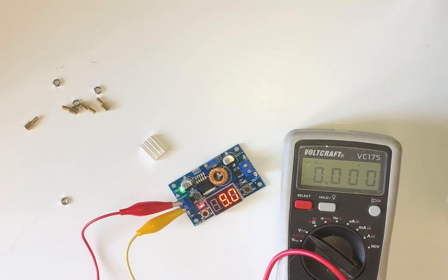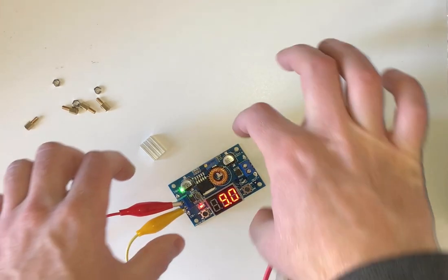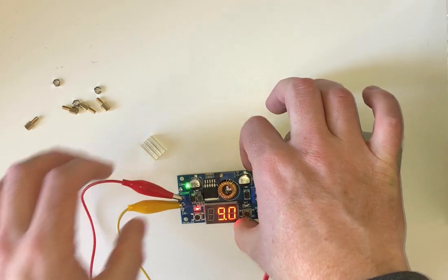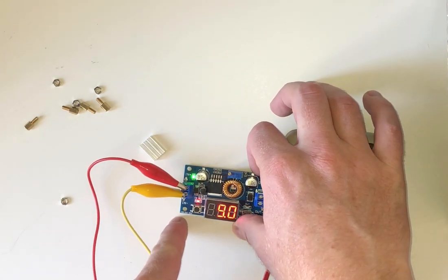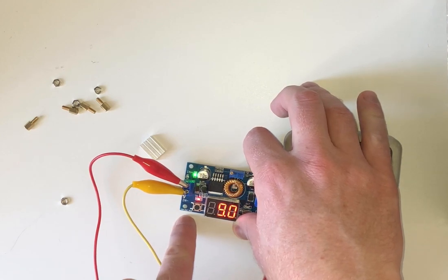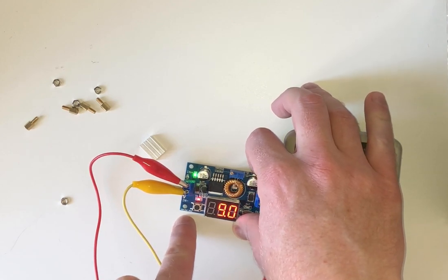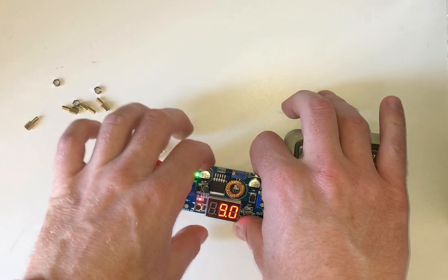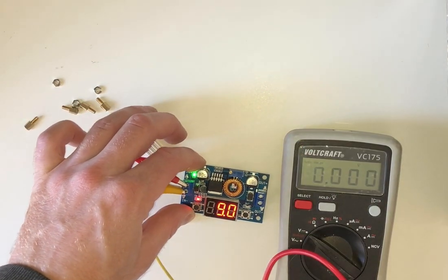Hello everybody. So this is a video on how to use this cheap power regulator that I got online from China. It's a HW316 version 6. This is just off AliExpress and it cost about two dollars I think.